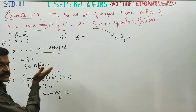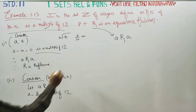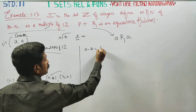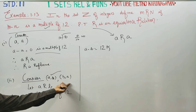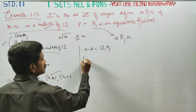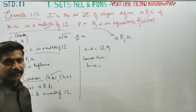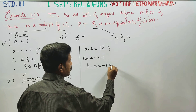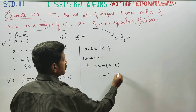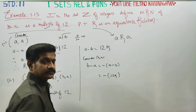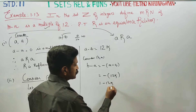A minus b is equal to some 12k. Now, b minus a equals minus (a minus b). Minus common gives minus (a minus b), which equals minus 12k. Therefore b minus a equals 12 times (minus k).